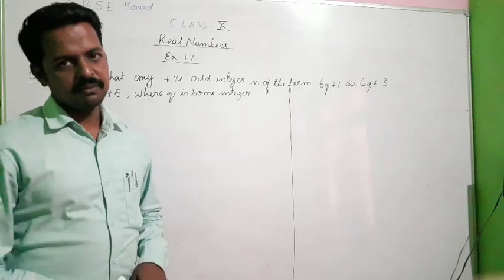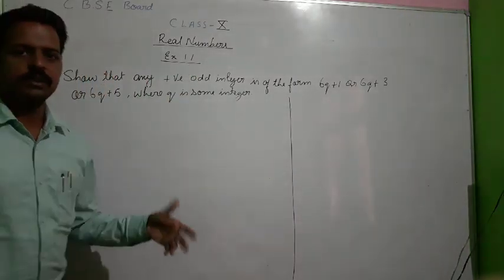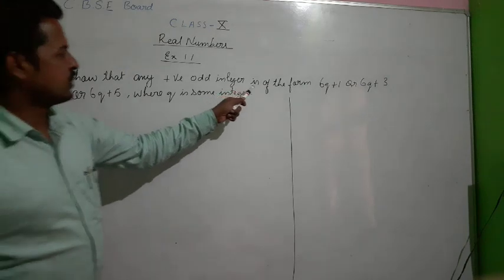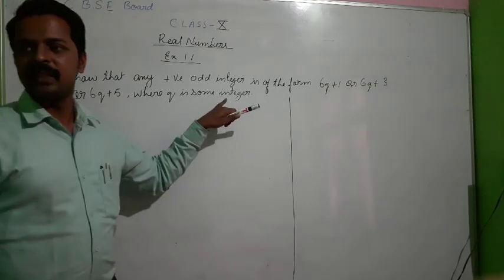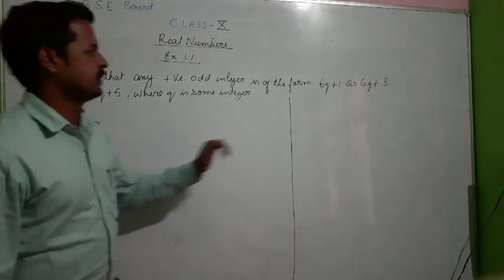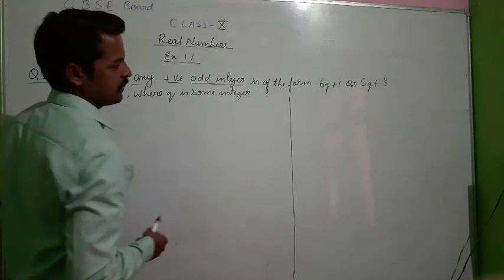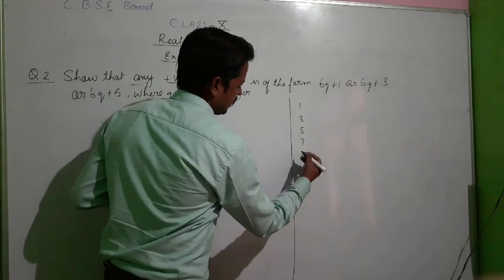Hello students, this is our second video on Class 10 Real Numbers. To see the earlier video, you can click the link in the description box. I have given the link of the first part. Now I am going to discuss Exercise 1.1 Question Number 2. The question says: show that any positive odd integer is of the form 6q+1, 6q+3, or 6q+5, where q is some integer.